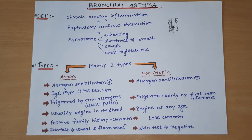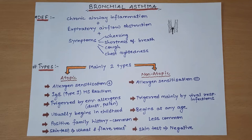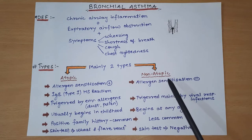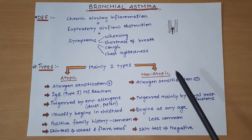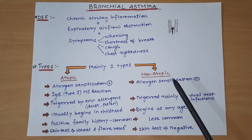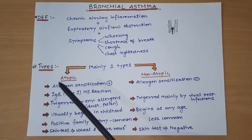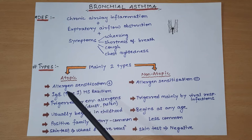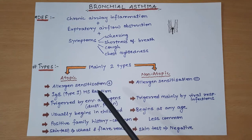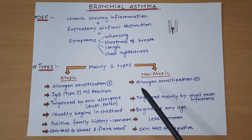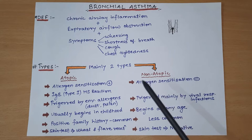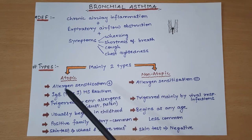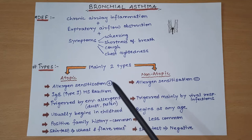After that we will discuss the types of Bronchial Asthma. Mainly we discuss two types in detail: atopic Bronchial Asthma and non-atopic Bronchial Asthma. We will also briefly discuss drug-induced asthma and occupational asthma.